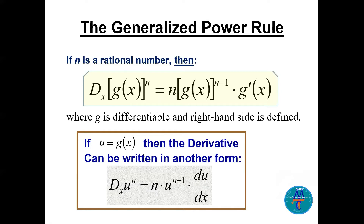The generalized power rule: if n is a rational number, the derivative of [g(x)]^n = n·[g(x)]^(n−1)·g prime(x). Equivalently, if u = g(x), then d/dx of u^n = n·u^(n−1)·du/dx.